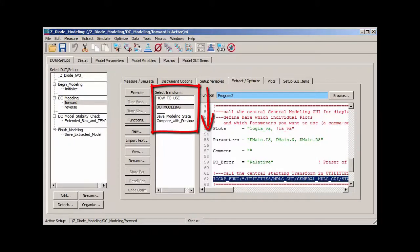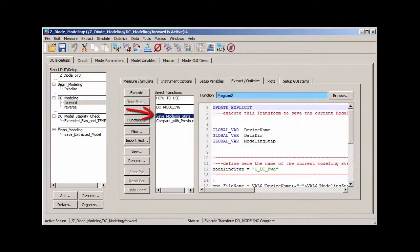Moving further down the transform flow, I execute save modeling state to save the current status of the model and its parameters for later reference.